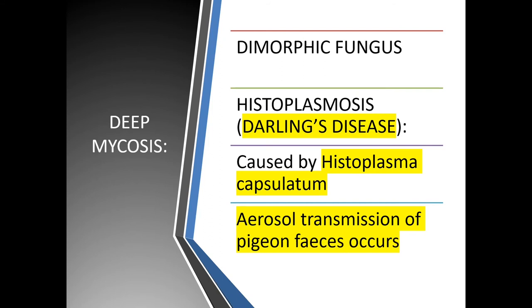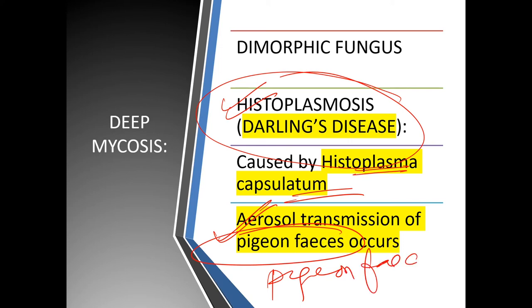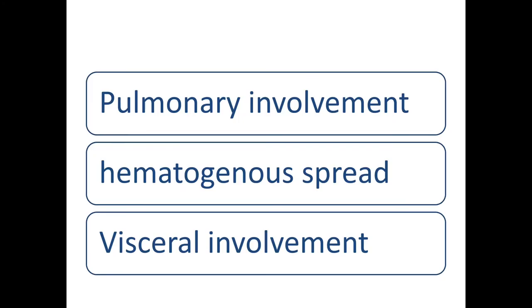Now deep mycosis. Histoplasmosis is also known as Darling's disease, caused by Histoplasma capsulatum. It occurs due to aerosol transmission from pigeon feces. It shows pulmonary involvement, hematogenous spread, and visceral involvement. The yeast form shows narrow-based budding yeast cells, and tuberculate macroconidia are seen. Histoplasmosis mimics TB in presentation.